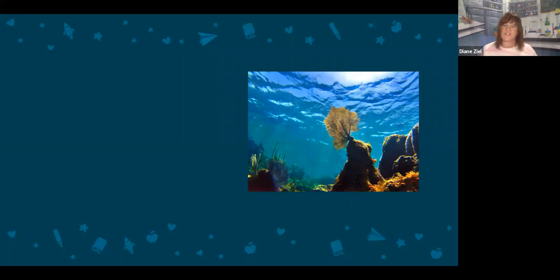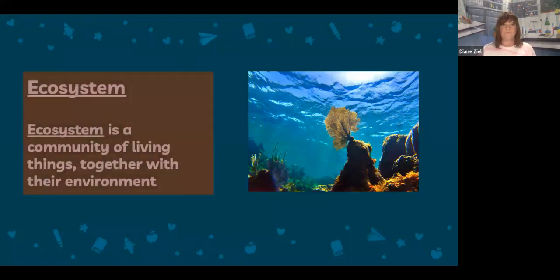Here you see a picture of a community of different living organisms underneath the surface of the water. What is this picture an example of? If you said ecosystem, you would be right. An ecosystem is a community of living things together with their environment.